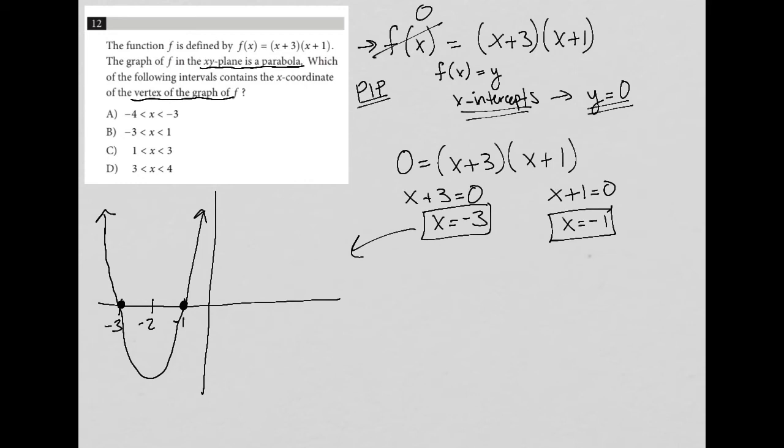My x value for the vertex is right here at x = -2, which I believe is where exactly it would be. But the question isn't asking for the exact value. It's just asking for the interval that contains the value. So be very careful of that.